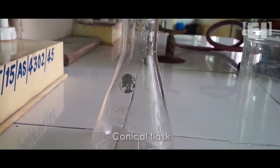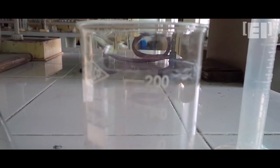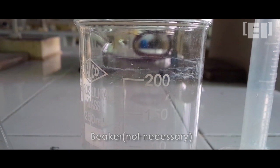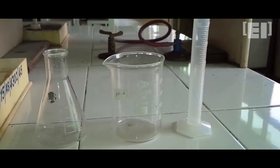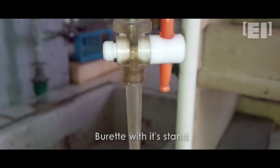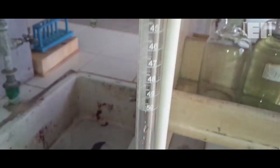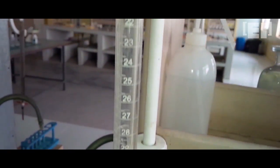The apparatus needed are conical flask, beaker, measuring cylinder, burette with its stand, and a wash bottle.